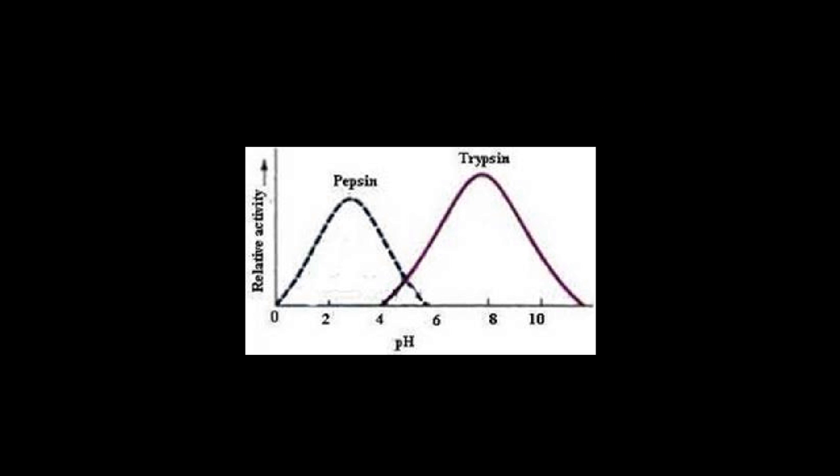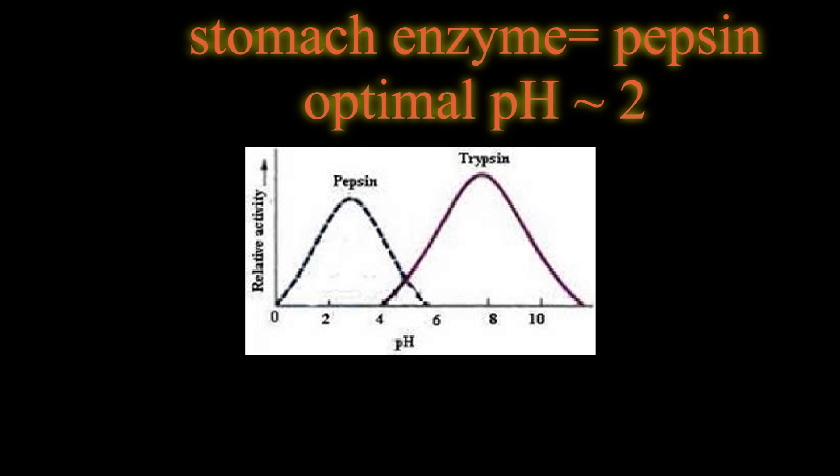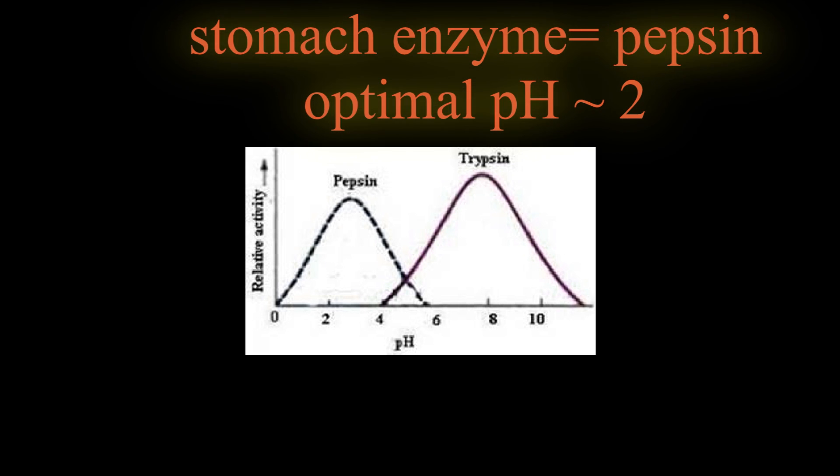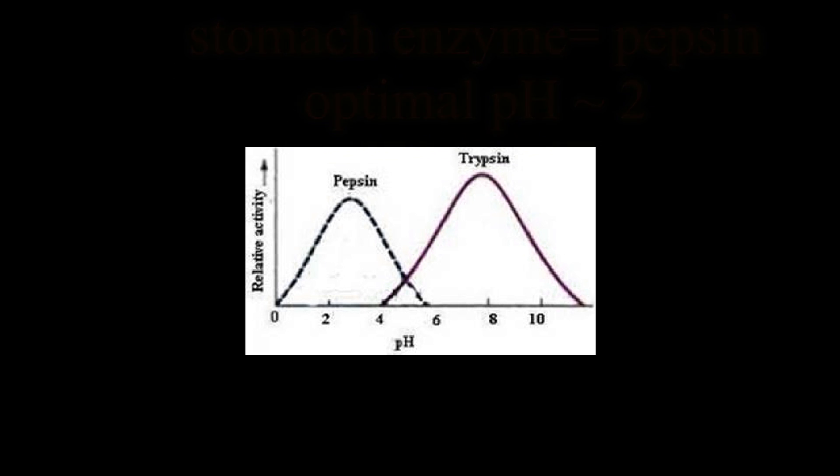So looking at the graphs for pH, the relative activity versus a pH, you can see that the stomach is going to have an optimal enzyme, say pepsin. The stomach enzyme pepsin is going to be optimal at 2, exactly what you would expect for an enzyme in the stomach.